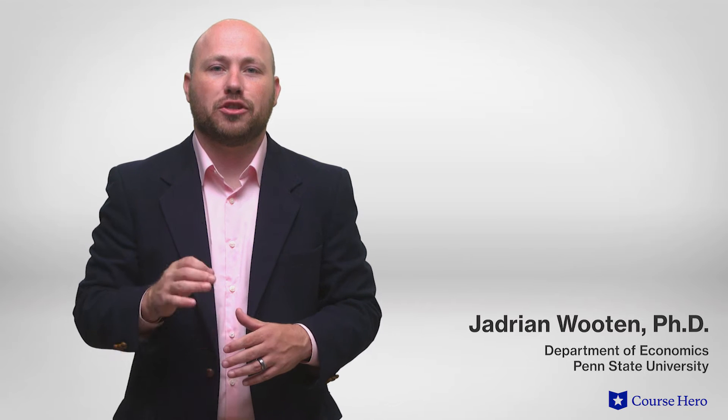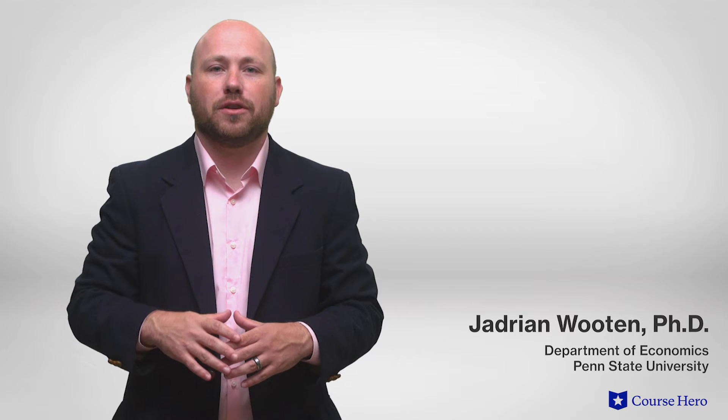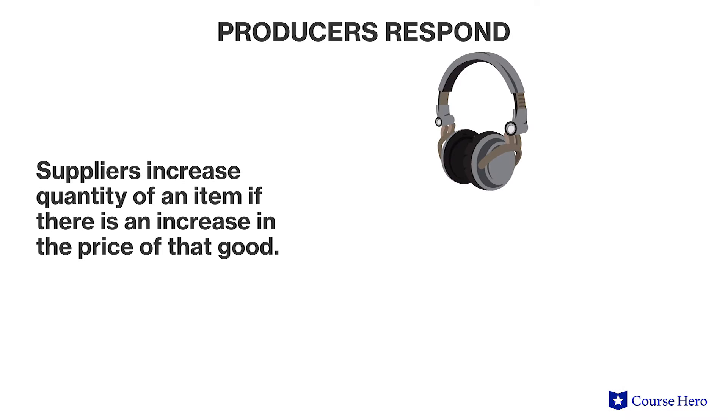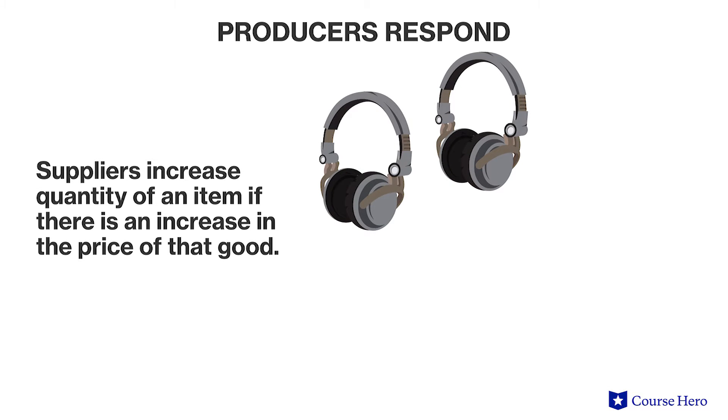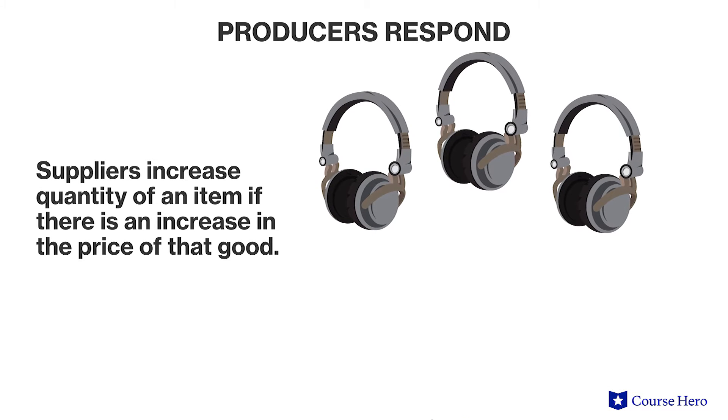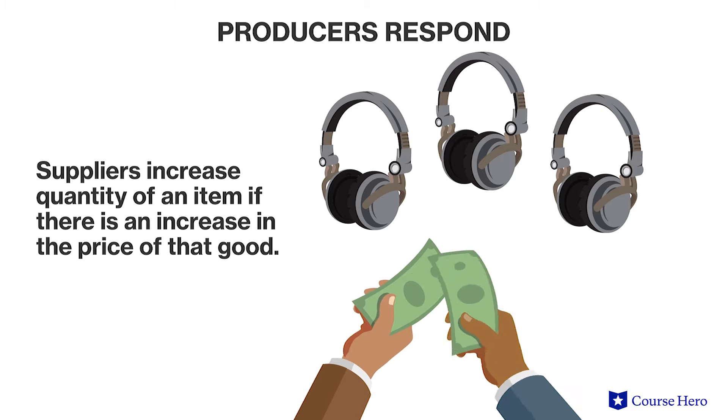Just as consumers respond to changes in the price of a good by changing their demand for it, producers respond to changes in the price of a good by changing the amount it supplies. Typically, suppliers will increase the quantity supplied of an item if they experience an increase in the price of that good. Quantity supplied usually has a positive or direct relationship with price.